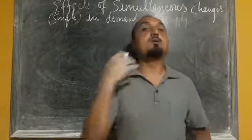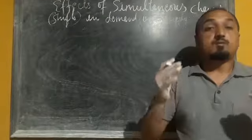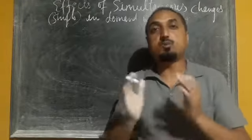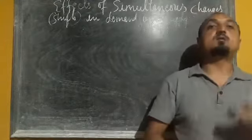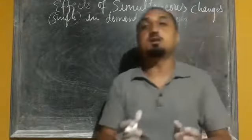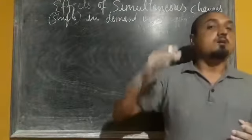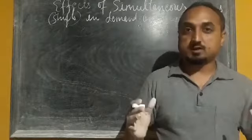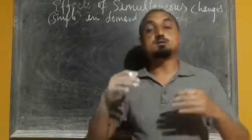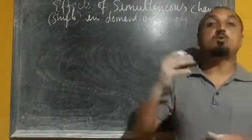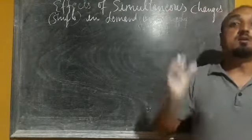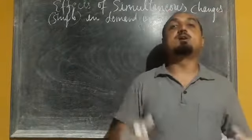In the previous class we discussed what will happen — what will be the impact on equilibrium price and quantity — when only the demand curve shifts and supply remains constant, and another case where supply changes and demand remains constant. So two cases we have discussed. Now here we are going to discuss what will happen to equilibrium price and quantity if demand and supply curve shift simultaneously.